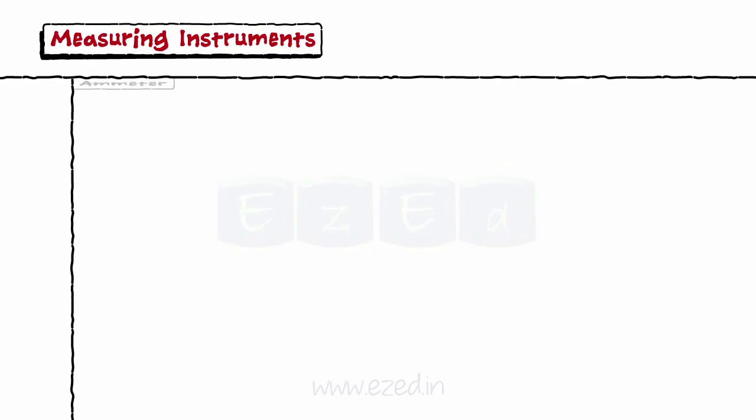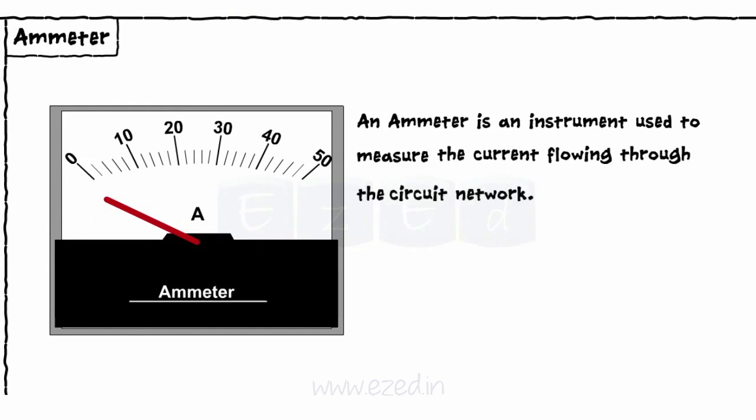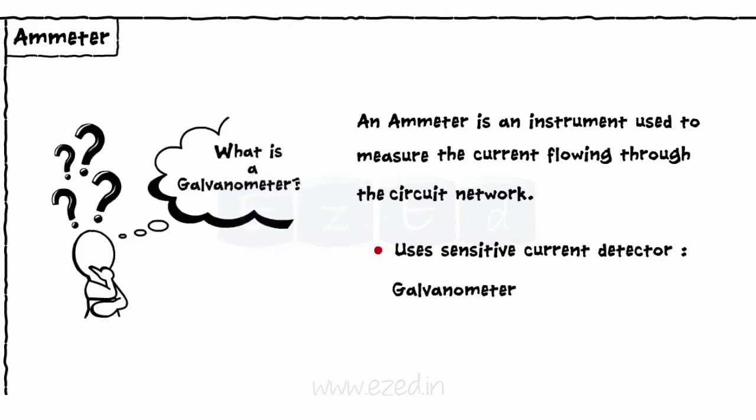Let's start with an ammeter. An ammeter is an instrument used to measure the current flowing through the circuit network. It is designed with the use of a sensitive current detector known as the galvanometer. But what is a galvanometer?